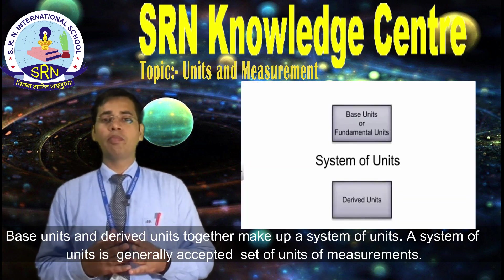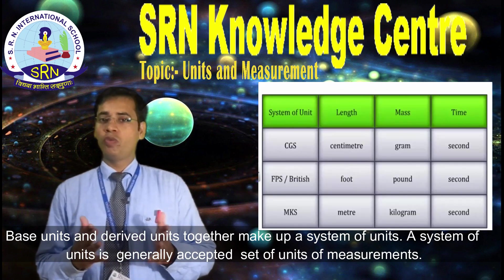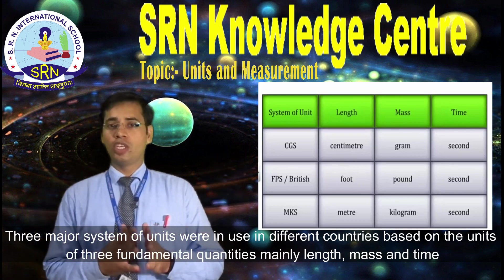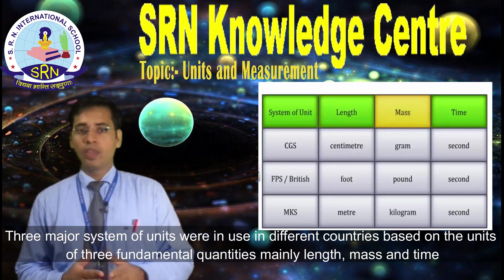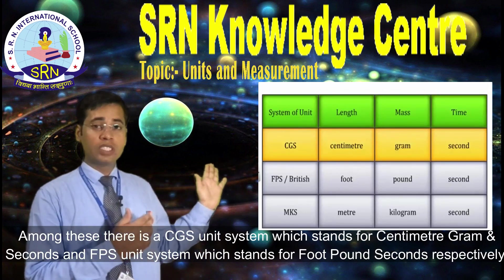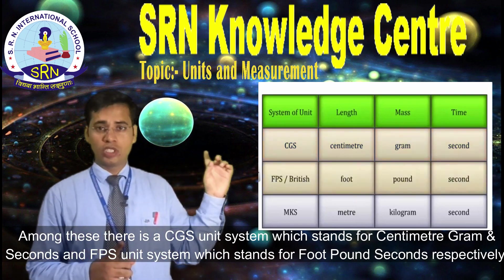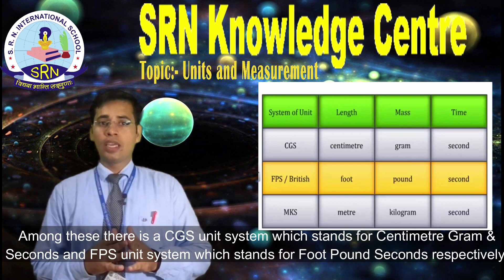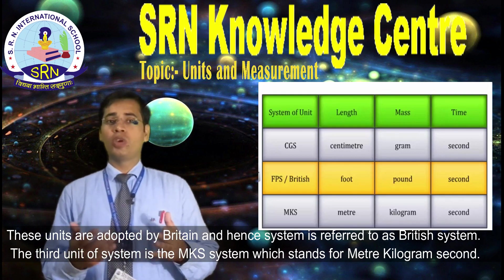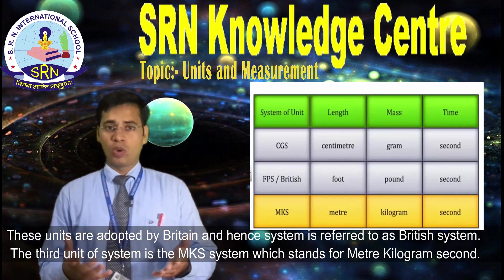Base units and derived units together make a system of units. A system of units is a generally accepted set of units of measurement. Three major systems of units were in use in different countries based on the units of three fundamental quantities, mainly length, mass and time. Among these, there is the CGS unit system, which stands for centimeter, gram and second. The second is the FPS unit system, which stands for foot, pounds and seconds, adopted by Britain and referred to as the British system. The third is the MKS system, which stands for meter, kilogram, seconds.